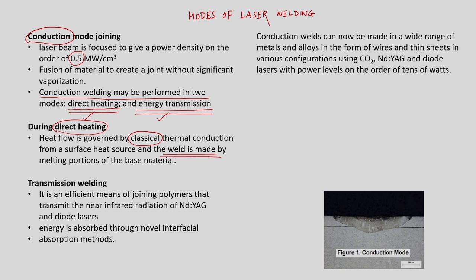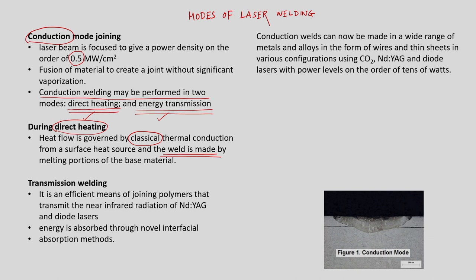In transmission welding, we use some innovative way to transmit the heat energy inside the work material. An absorbing ink is used to absorb the laser power, get heated, and then transmit or dissipate the heat energy inside the work material — that is transmission welding. This method uses novel interfacial absorption methods such as inks, and transmission welding is basically used for polymers, including transparent materials such as polycarbonates.